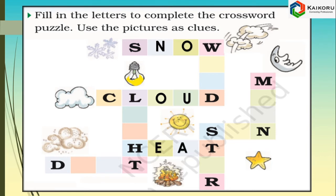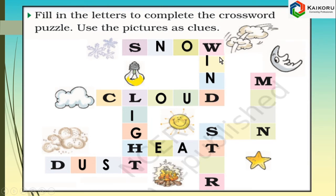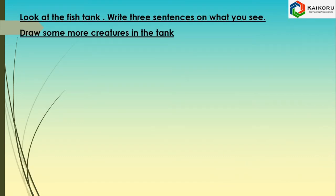And what is this? This is dust — D-U-S-T. And what is this? This is light — L-I-G-H-T. What is this? This is wind — W-I-N-D. And this is moon — M-O-O-N. And this is star — S-T-A-R.